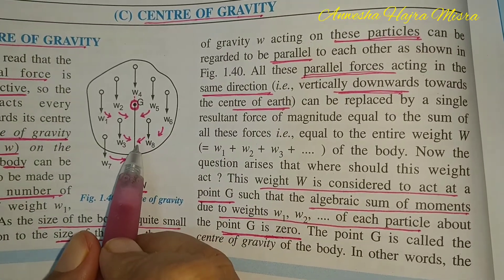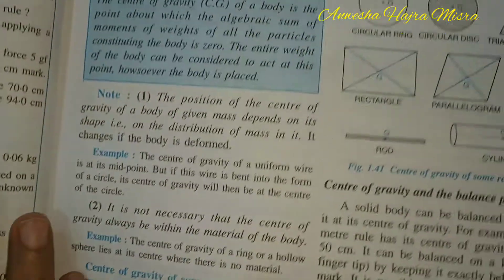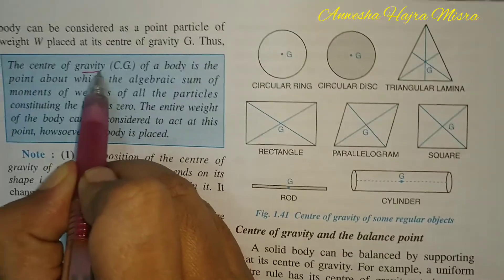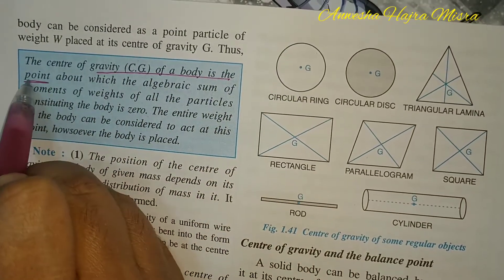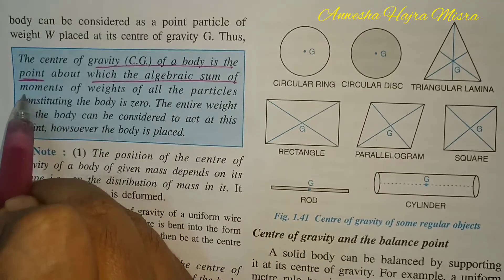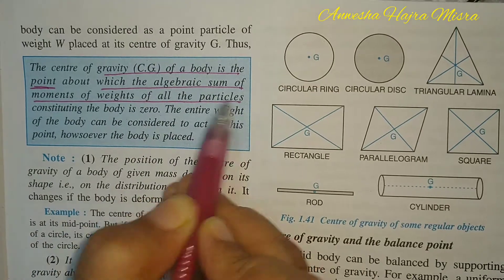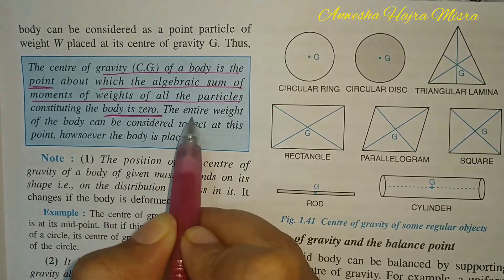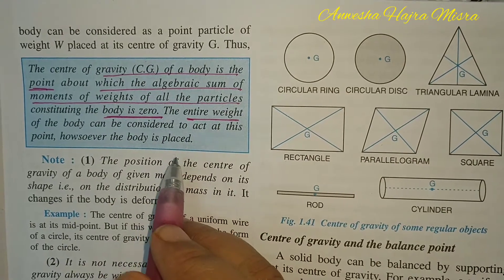Now let us go to the definition of center of gravity. Center of gravity of a body is a point about which the algebraic sum of moments of weights of all the particles is zero, and the entire weight acts at that point.